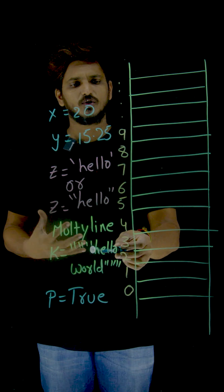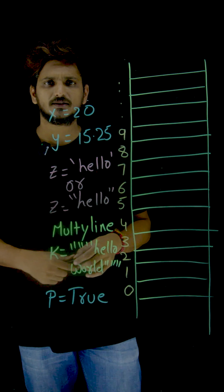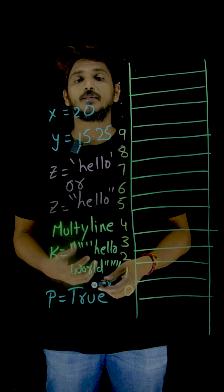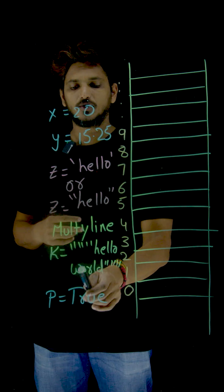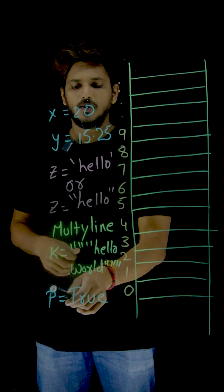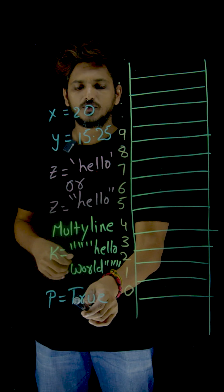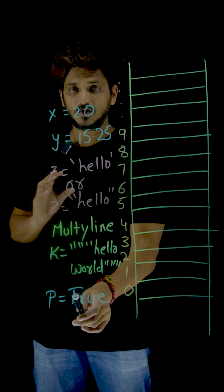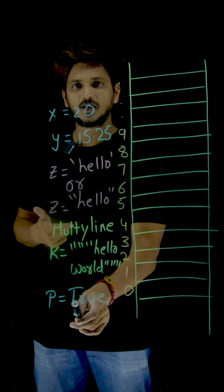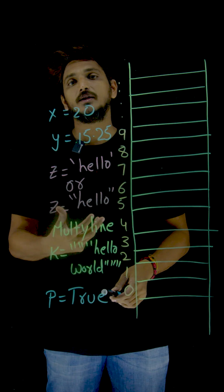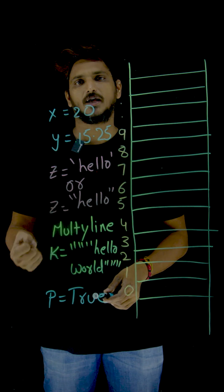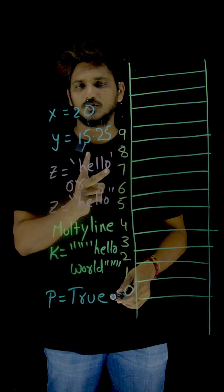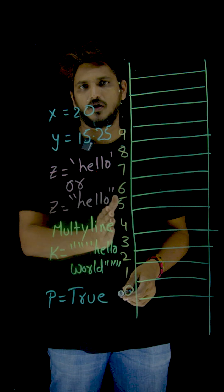Now coming to the boolean data type. Boolean data type contains only two values: True or False. P is equal to True — the T in True has to be a capital letter in Python. If you mention it like this, it is going to be considered as boolean data type. In boolean data type we have only two values: True or False.